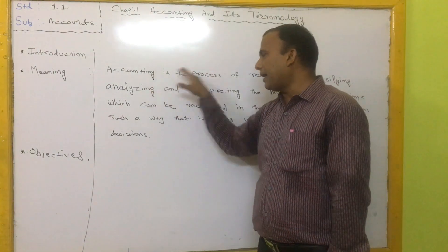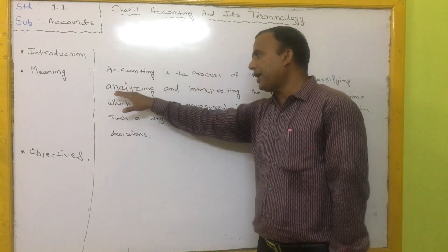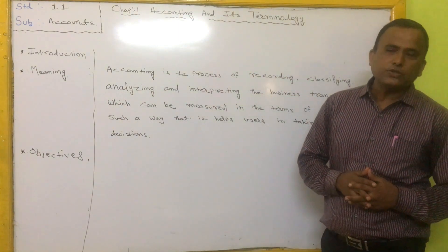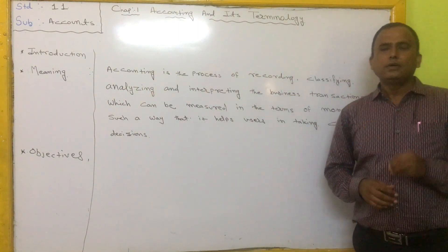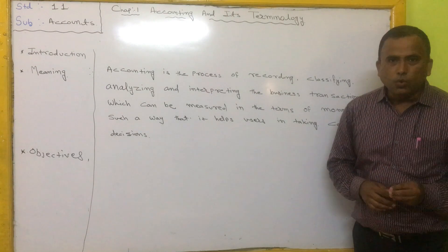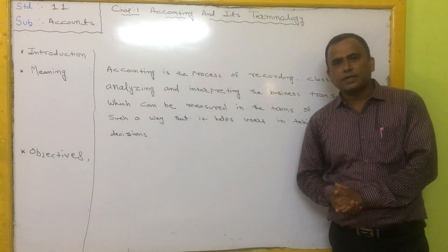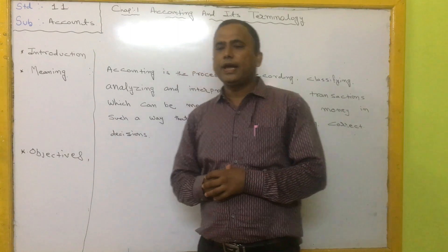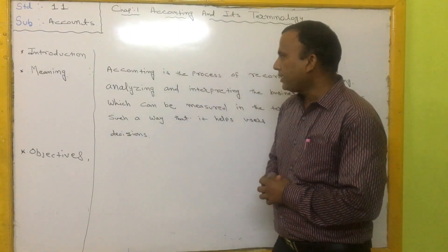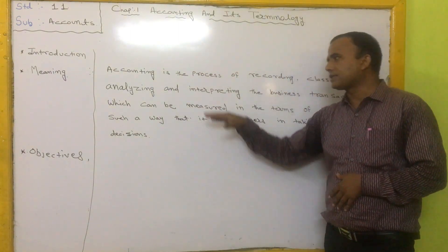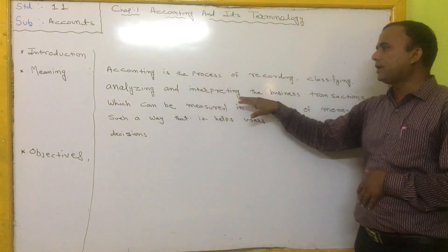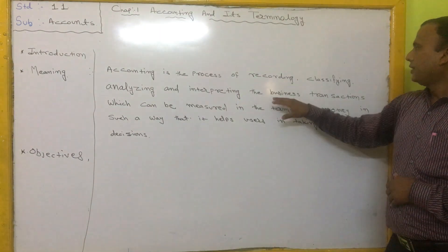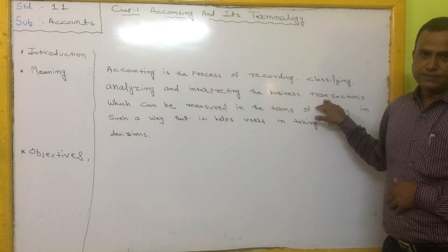The third process is analyzing. After classifying, you have to analyze the transactions — that means you have to apply the rules of the Double Entry Bookkeeping System. Then after that comes the fourth process: interpreting the business transactions.